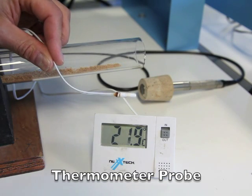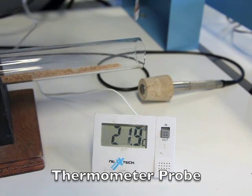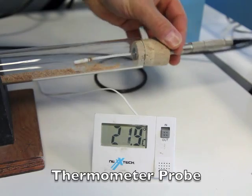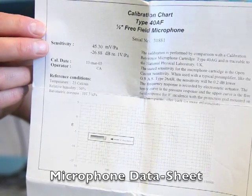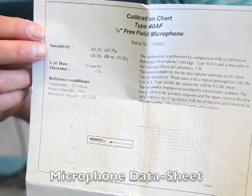We're going to need to measure the ambient air temperature so we can use this little thermometer probe with a digital readout, which we can even put inside the resonant tube. And we also need to record the serial number and the sensitivity from the data sheet from the microphone.